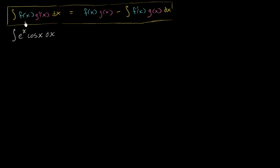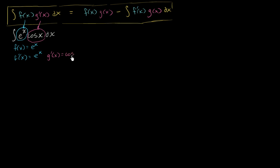Let's assign f(x) = eˣ and g'(x) = cos(x). So f'(x) = eˣ, since the derivative of eˣ is just eˣ. And g'(x) = cos(x), so g(x) — the antiderivative of cos(x) — is just sin(x).